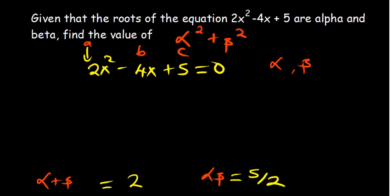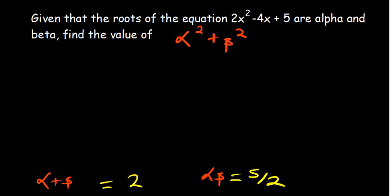Now, what do we do? Each time you want to find the value of any alpha and beta given in any form, you need to express them in the form of addition and also product. So the easiest way we can simplify this one, where we're saying α² + β².